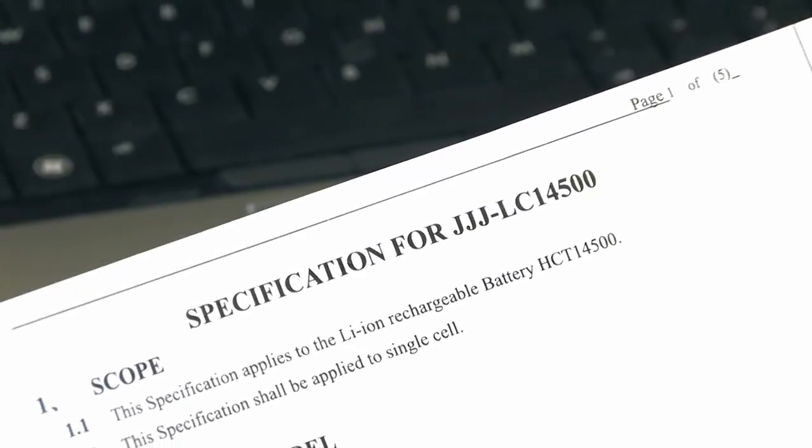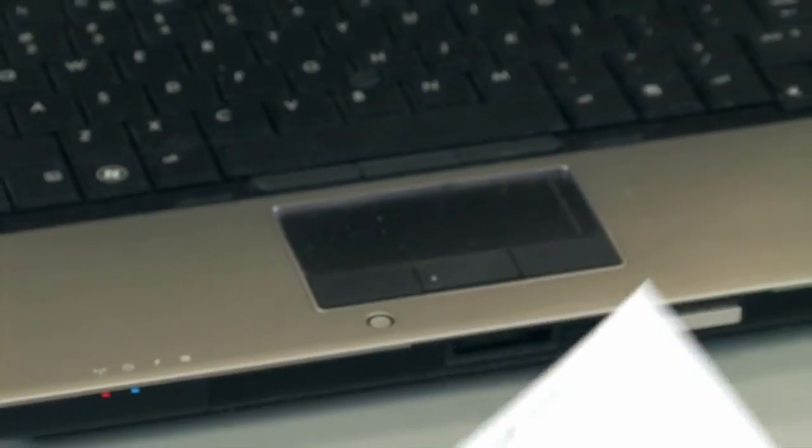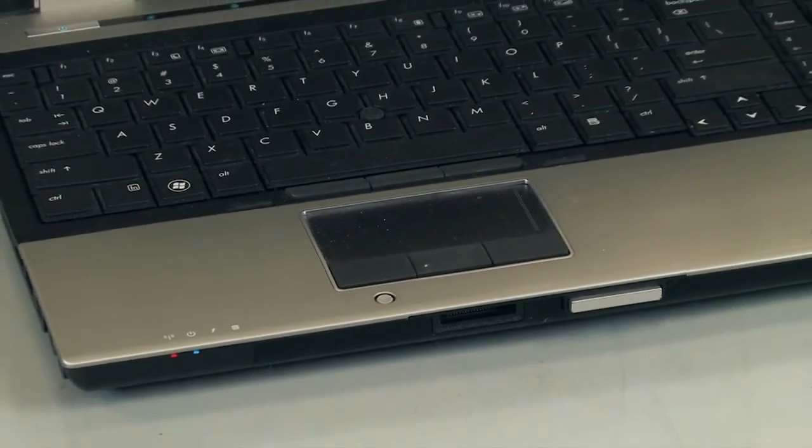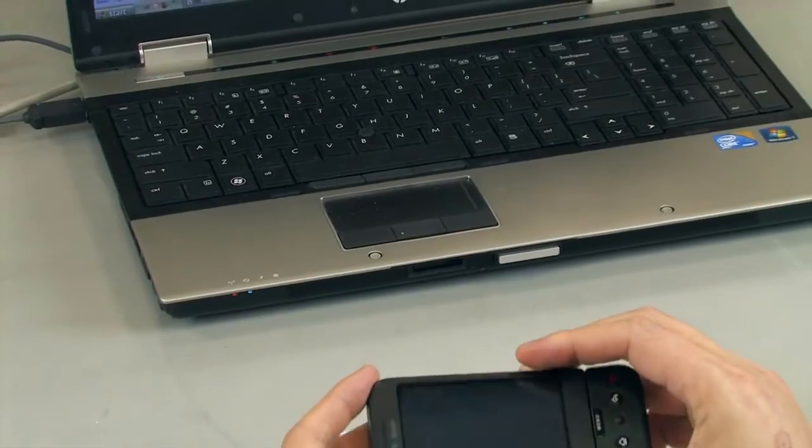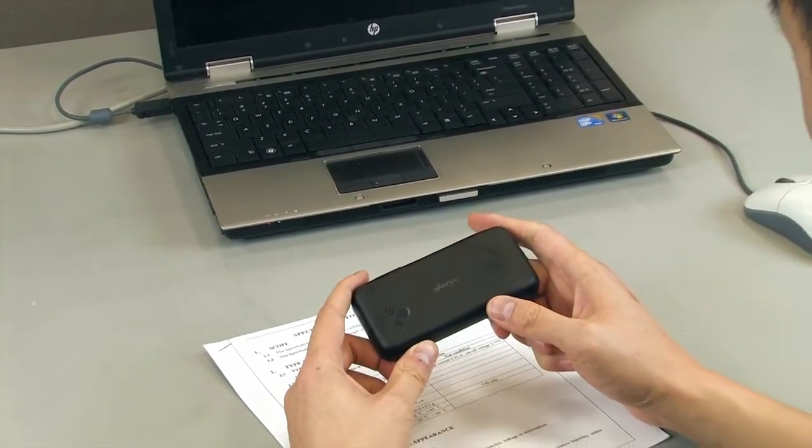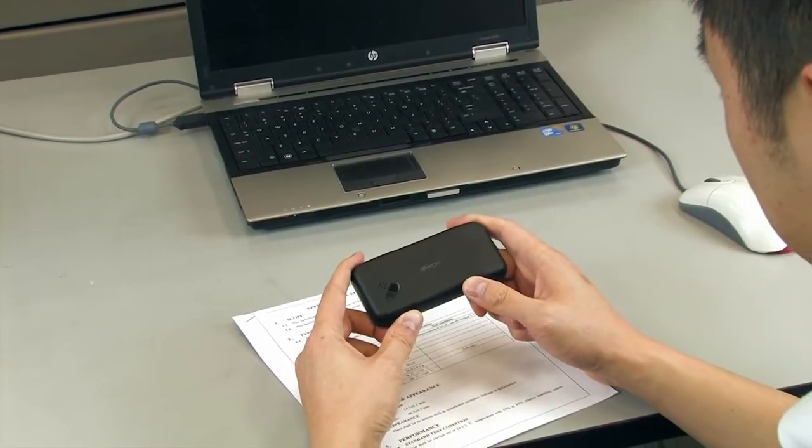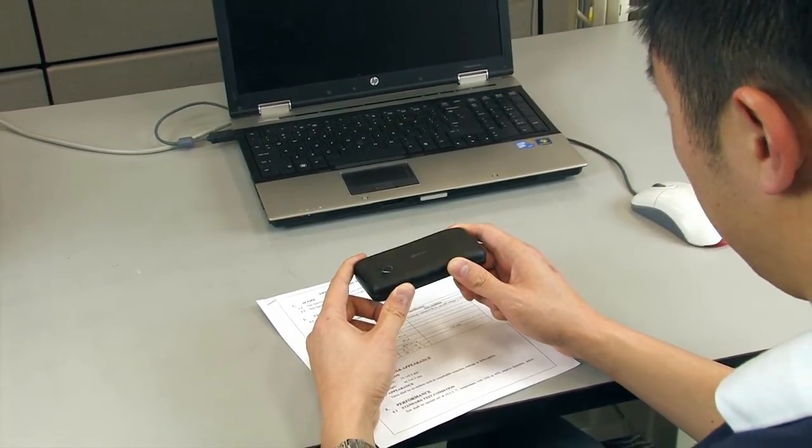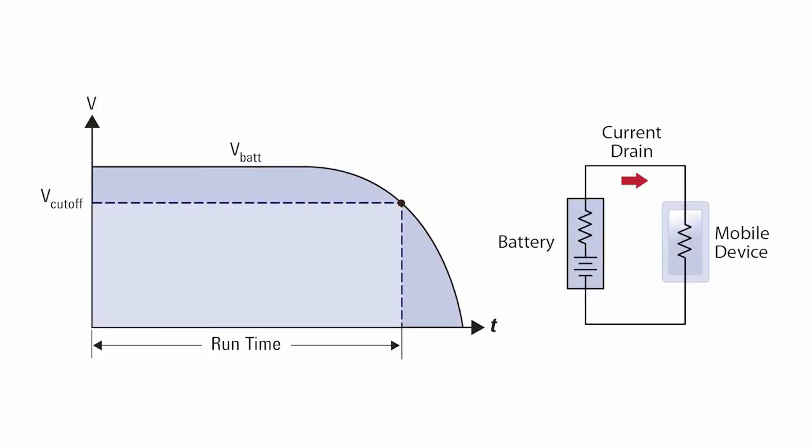If you determine a device's runtime based solely on a manufacturer's datasheet without validating the battery's ratings, your results are likely to be inaccurate. The stated capacity is often based on ideal conditions and represents the maximum charge you might obtain from the battery. Actual capacity will usually end up being less when you verify it in your application.